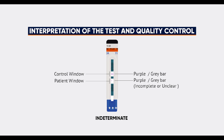If one purple or grey bar appears in the strip's patient window, labelled 'patient', the TB-LAM result is indeterminate. For a better clinical decision, the test should be repeated. Alternatively, collect a new urine sample in the following days from the patient and test. Early morning urine is recommended.